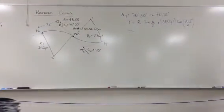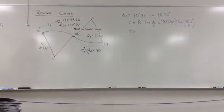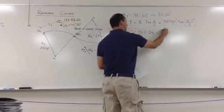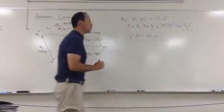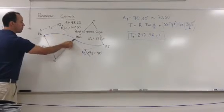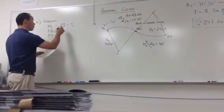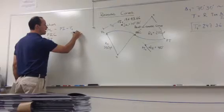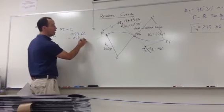Now what we're doing right now is basically the same we did before. 247.36 feet, so we found tangent, right? Tangent 1, which is the distance between my PC and my PI, which is the same distance between PI and my PRC. So now what I need to do is I need to come in here and replace that value. This will be equal to PI station, which is 21+93.66, minus 247.36.